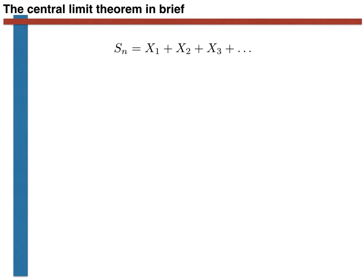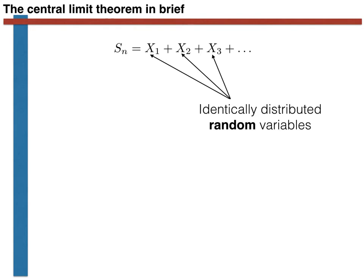The idea here is similar to the ideas we had for the law of large numbers. We are calculating a sum of independent and identically distributed random variables. Each of these random variables is an x value, and the sum of them is called Sn. If we take this summation and divide it by the number of experiments we have performed, n, we get a number that is itself random.